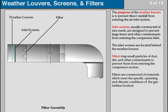Inlet screens, usually constructed of wire mesh, are designed to prevent large items and other contaminants from entering the compressor inlet. The inlet screens are located behind the weather louvers. Filters trap small particles of dust, dirt, and other contaminants to prevent them from entering the compressor section.